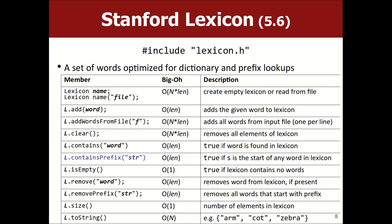There's a specialized collection called a lexicon — it's like a set but only stores strings. A set can be a set of int, bool, char, string, or anything; a lexicon is implicitly a set of strings. It has almost exactly the same operations as a set, plus prefix-search operations — for example, asking whether any word in the set starts with 'mar.' A set of strings is perfectly adequate, but lexicons have those extra capabilities.